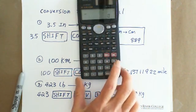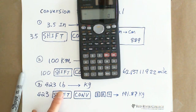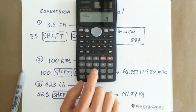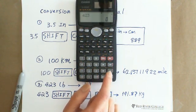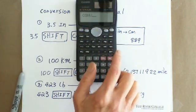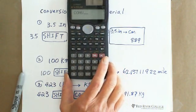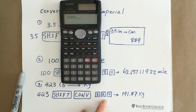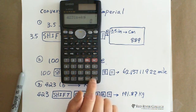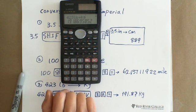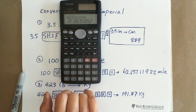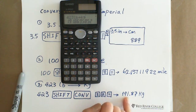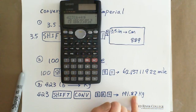And next, I want to show you the third example is 4.23 pounds equals how many kilograms. So you have 4.23 pounds. You need to go to shift. And then conversion. And looking for the code number which is 23. And hit the equal sign. And 191.87 kilograms. If you keep two decimal places.